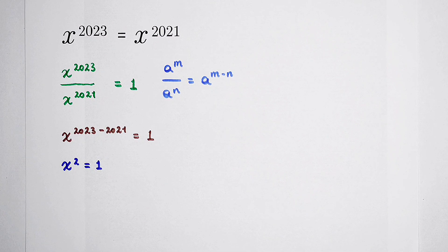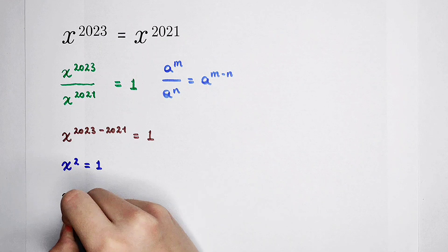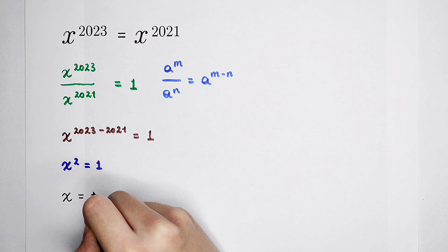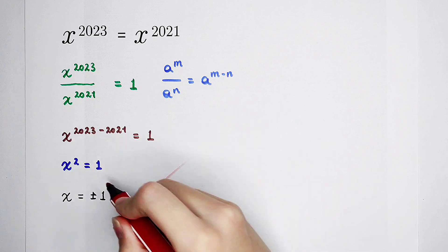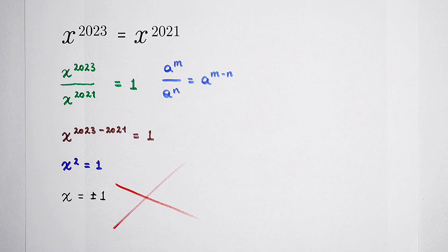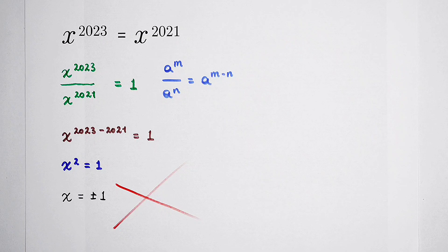So you'll get x is equal to positive or negative 1. But your method is totally wrong, because you've lacked a case.